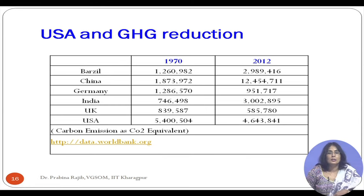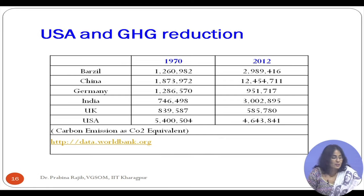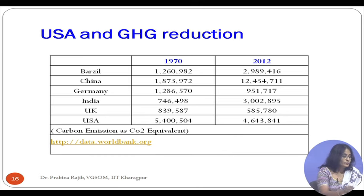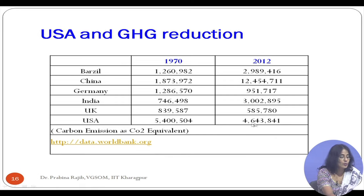Let us discuss USA and the Kyoto Protocol and Greenhouse Gas Emission Reduction initiatives. This table shows greenhouse gas emissions during 1970 and 2012, calculated from worldbank.org. Brazil emitted 1.26 million in 1970 rising to 2.989 million in 2012. China shows remarkable growth — almost 11 times. India has also risen significantly. USA went from 5.4 million down to 4.64 million between 1970 and 2012.